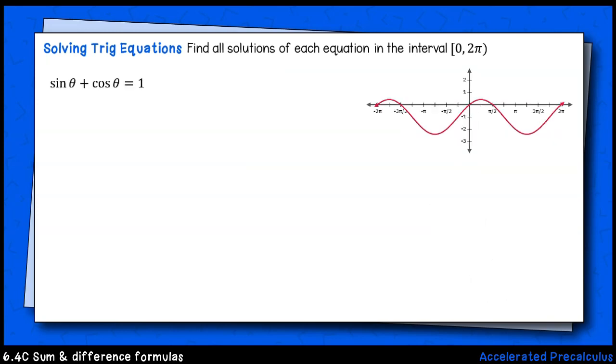Let's do one more together. This time we have sine of theta plus cosine of theta equals one. Looking at this equation, there are no apparent substitutions that we can make using any of our known identities. So I'll square both sides of the equation with the intent to generate squared functions to make a substitution using the Pythagorean identities.